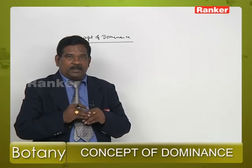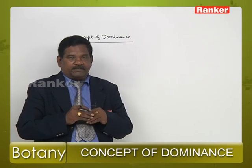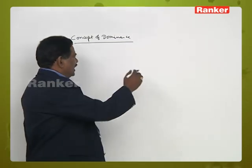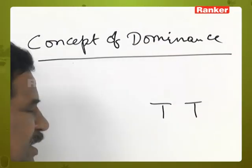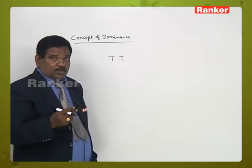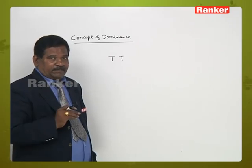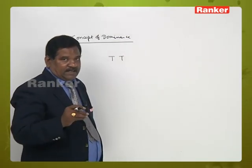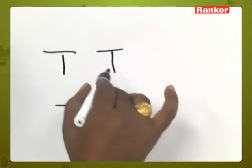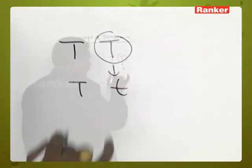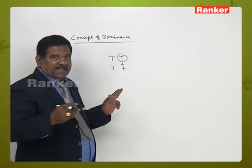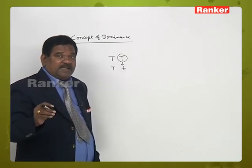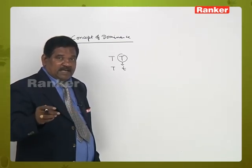In wild species, all genes that are the same express the same character. For example, the height of the stem — these two alleles express the same character. But due to some mutations, one allele changes. The allele that remains unchanged is the one that expresses the character normally.